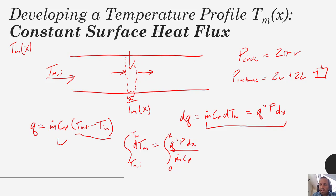In doing that integration, we would end up getting the mean temperature at some x minus the mean temperature at the inlet equals our flux times perimeter over m dot cp multiplied by x.